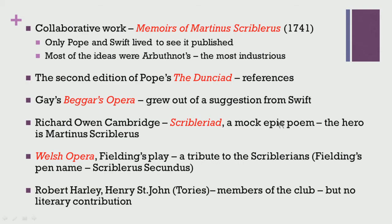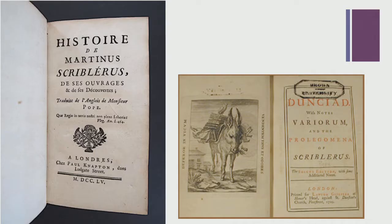There is also the assumption that Gay's Beggar's Opera grew out of a suggestion from Swift, showing how they continued to inform and influence each other's productions. Other popular references to Martinus Scriblerus include Richard Owen Cambridge's mock epic poem titled Scribleriad, in which the hero is also Martinus Scriblerus. Fielding later staged a play called Welsh Opera as a tribute to the Scriblerians, and his pen name was Scriblerus Secundus. There were also 2 more members of the literary club — Robert Harley and Henry St. John — both Tories, though they did not make a significant literary contribution.